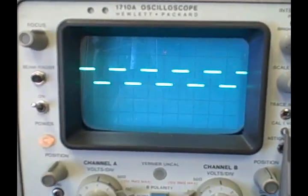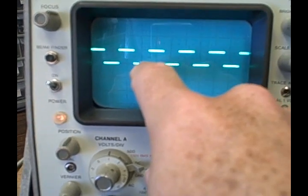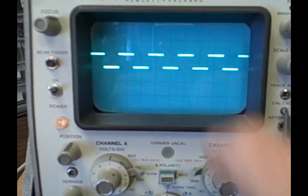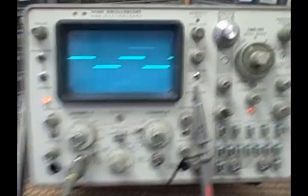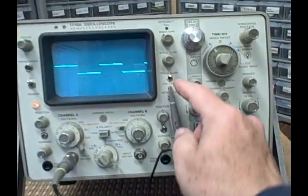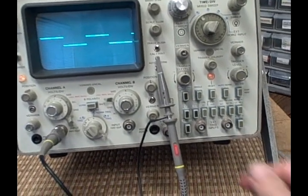What I have now is a one kilohertz signal bouncing one volt per division. So we're set up with the probe on the calibration point, the probe calibration point.